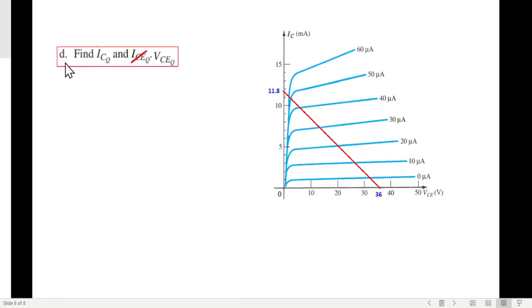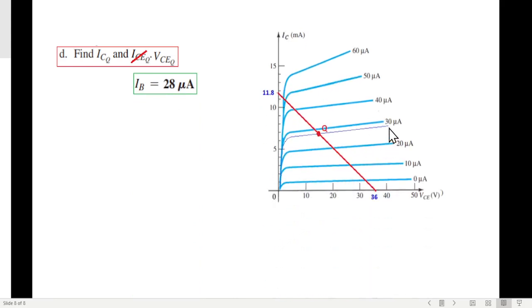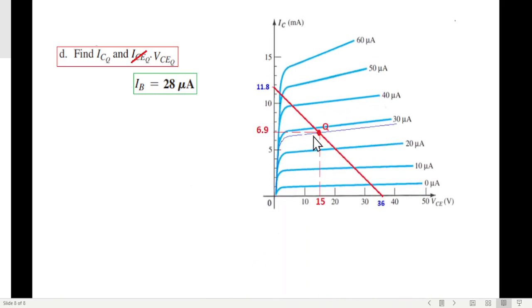And so the final question is find ICQ and VCEQ. Actually it should have been with the actual IB or with the final value of IB. Anyway, we know now that the IB is 28 microampere. And if we try to plot it here, it will be somewhere like this, so it will be like this line 28. And touching at this with the load line, this will be our real operating point or Q point. And extending this on both sides, we can find ICQ is about 6.9 milliampere and VCEQ about 15 volt. So 6.9 milliampere and 15 volt is the answer.